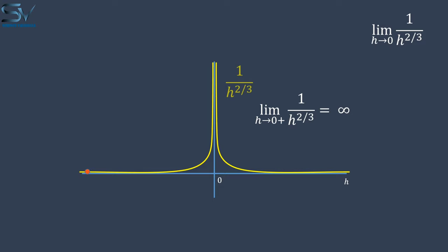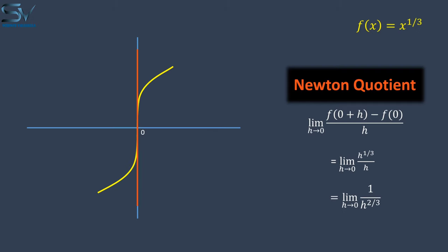Even when h approaches the origin from the left side, this function approaches positive infinity. Because both the left and right limits are approaching positive infinity, the limit of this function on the origin will be positive infinity.